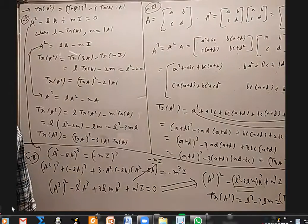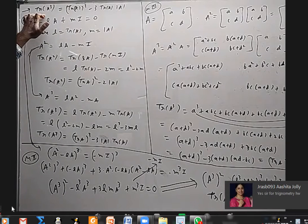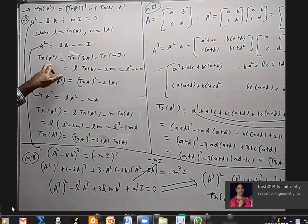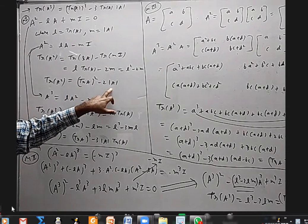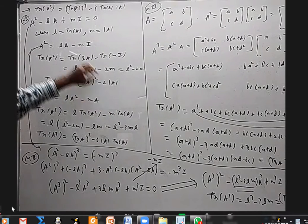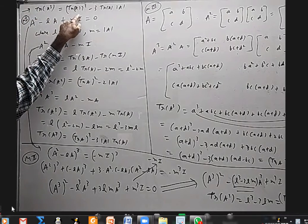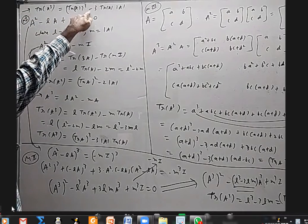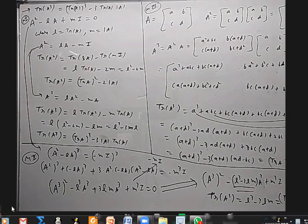In our previous class, we left off on the last topic: trace of A squared, and how it equals trace(A) whole squared minus 2 times trace(A). Now we want to discuss trace(A³) equals trace(A) whole cubed minus 3 times trace(A) times det(A). I'm going to discuss three methods.